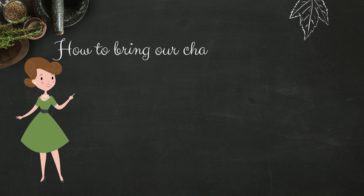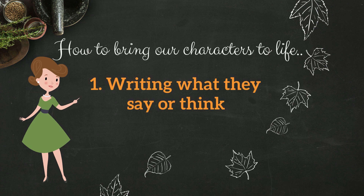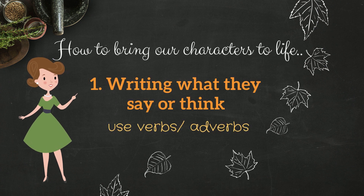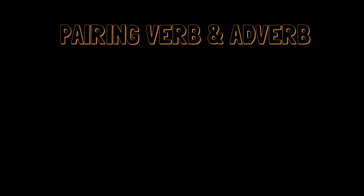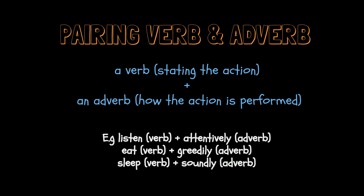How can we bring our characters to life? The first way is by writing what they say or think. This can be done by using verbs and adverbs. Pairing a verb and an adverb will make your story more lively. A verb states the action and an adverb states how the action is being performed. For example: listen attentively, eat greedily, sleep soundly.